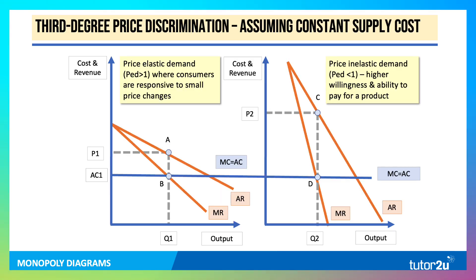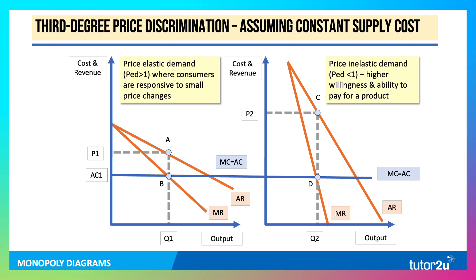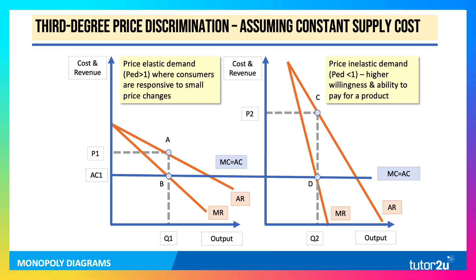Monopolies can price discriminate — charge different prices to different groups for reasons not associated with costs of production for the same product. Here's a simple third-degree price discrimination diagram where you charge a lower price P1 to a price-sensitive or price-elastic group, and a higher price P2 to a segment of the market that's willing and able to pay more. The total profit would be higher than if you set one uniform price. Indeed, if you set a price of P2 in the whole market, nobody in the left-hand market would be willing and able to pay.